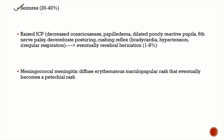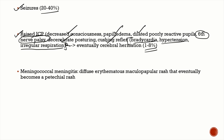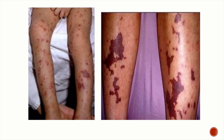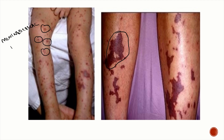Seizures occur in 20 to 40% of patients. Signs of raised intracranial pressure include decreased consciousness, papilledema, dilated and poorly reactive pupils, false localizing sign causing sixth nerve palsy, decerebrate posturing, and Cushing's reflex — bradycardia, hypertension, and irregular respiration. 1 to 8% of patients die from cerebral herniation. A diffuse petechial rash is the important clinical clue for meningococcal meningitis.